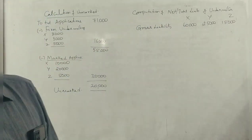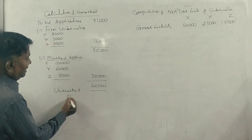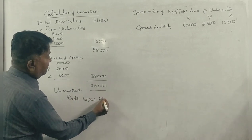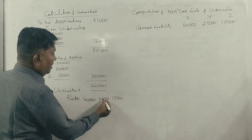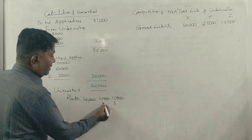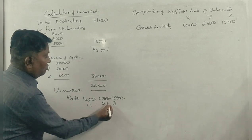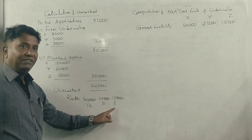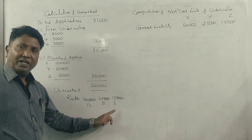First process, we get what we call ratio. Gross liability ratio, what do you call it? 60,000, 25,000, and 15,000. I will get 12 is to 5 is to 3. 12 plus 5 is 17, 17 plus 3 is 20. I will get 12 by 20, 5 by 20, 3 by 20.